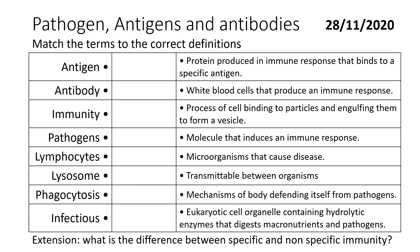Even if you've done double science, I would expect you to know the majority of the words on the left-hand side. The words lymphocyte and phagocyte may be new to you — you would have just referred to them as white blood cells. Lysosomes will also be new to you; it's part of the A-level course and normally isn't mentioned at GCSE, and refers to an organelle inside a cell.